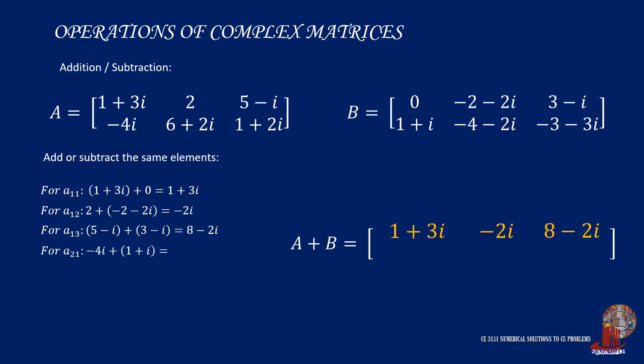The next row starts with element 2,1 where we add negative 4i with 1 plus i. Collecting the real numbers, we have 1, and the imaginary numbers result to negative 3i. Moving on to element 2,2, we have 6 plus 2i plus negative 4 minus 2i where the imaginary numbers cancel out, leaving positive 2.